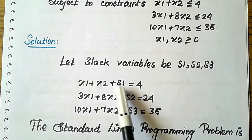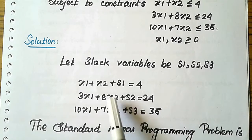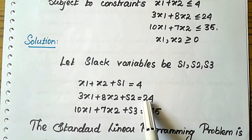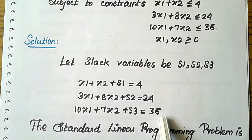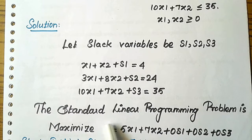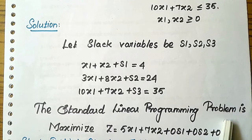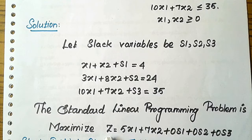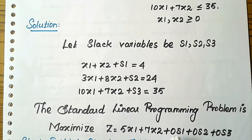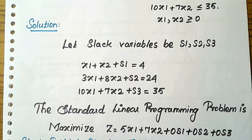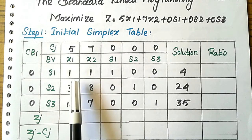After adding the slack variables, the constraints become: x1 + x2 + s1 = 4, 3x1 + 8x2 + s2 = 24, and 10x1 + 7x2 + s3 = 35. Now we write the problem in standard form. The objective function is Maximize Z = 5x1 + 7x2 + 0·s1 + 0·s2 + 0·s3, since the slack variables have zero coefficients.